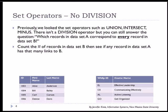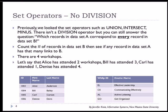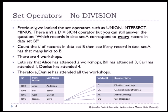So first we would count the number of records in dataset B. So there are four. Then we would count how many workshops each student has attended. And we see Alice has two, Bill has attended three, Carl has attended one, Denise has attended four. Therefore Denise has attended all of the workshops. And that's how we would perform what's known as the division problem.